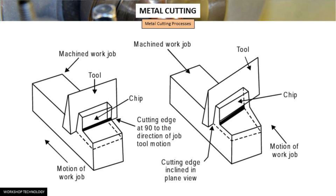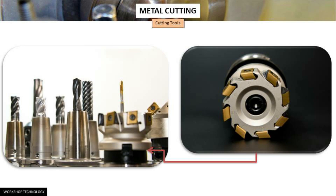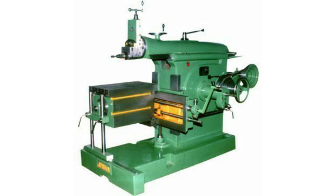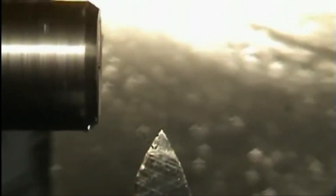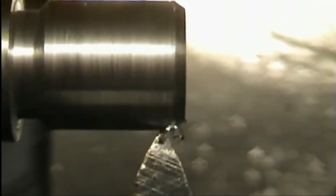General metal cutting operations are shown here. These machining processes are performed on metal cutting machines, more commonly termed as machine tools, using various types of cutting tools. They can be single point cutting tools or multi-point cutting tools. A machine tool is a power-driven metal cutting machine which assists in managing the needed relative motion between the cutting tool and the job, that changes the size and shape of the job material.